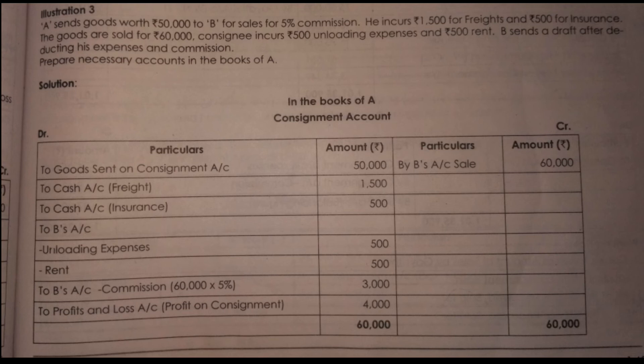This is basically the consignment account. If you look at the problem here, how the consignment account is opened: on the debit side, you have 50,000. The consignor makes freight expenses of 1,500. B has unloading expenses of 500 and rent of 500. Now the commission: the credit side is 60,000, so the commission on 60,000 at 5% is 3,000.